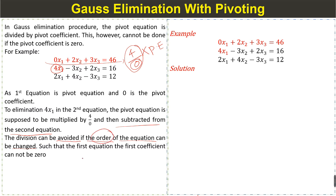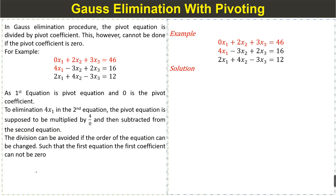The division can be avoided if the order of the equations is changed. This changing of the order of the equations is called pivoting, such that the first coefficient of the pivot equation is non-zero.